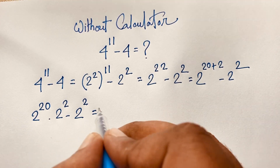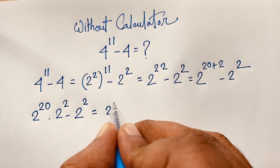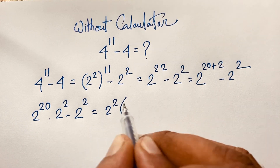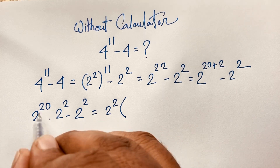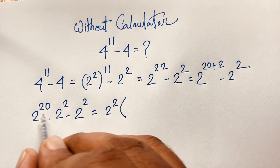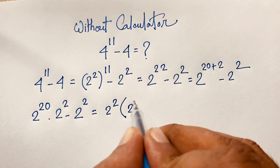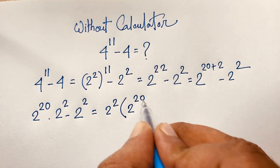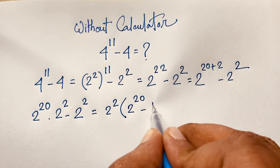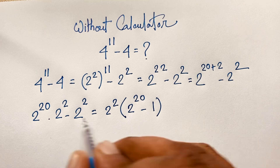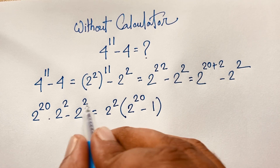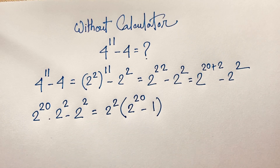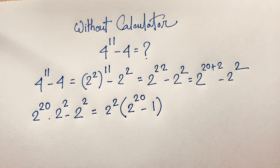Now in this expression, 2 to the power 2 is common. So I take 2 to the power 2 as a common factor. Dividing gives 2 to the power 20 minus 1, because 2 to the power 2 divided by 2 to the power 2 equals 1.